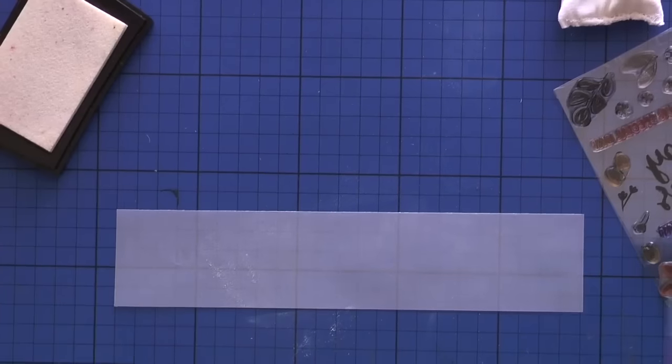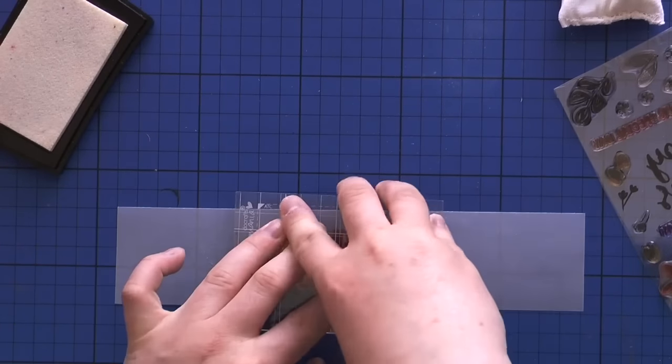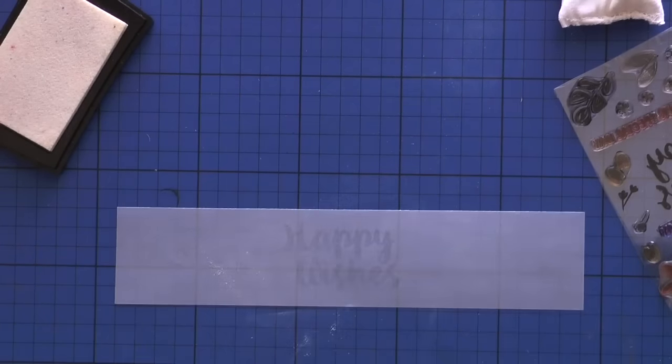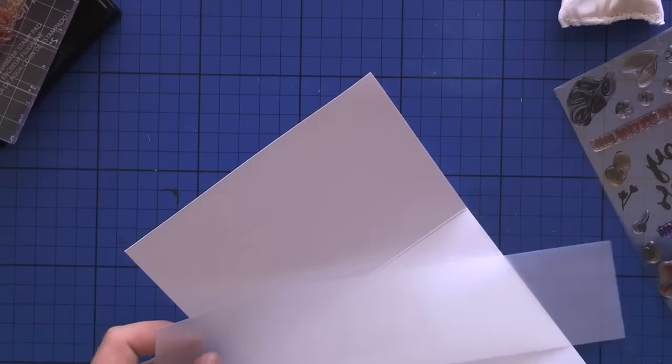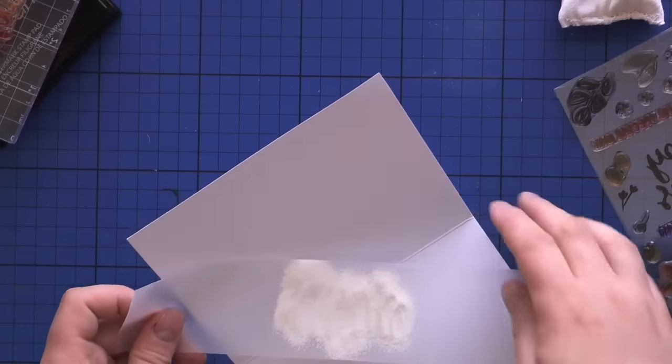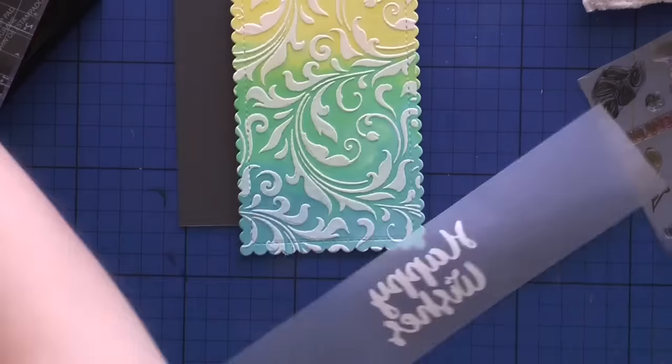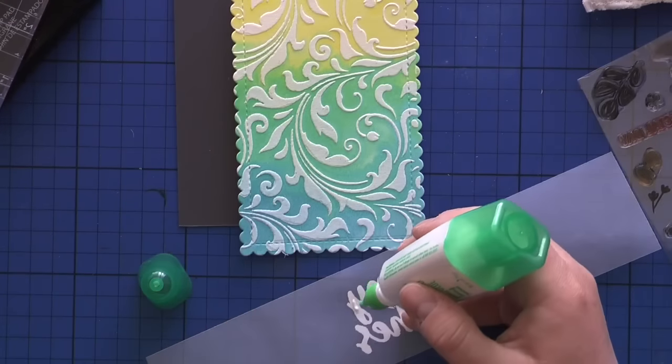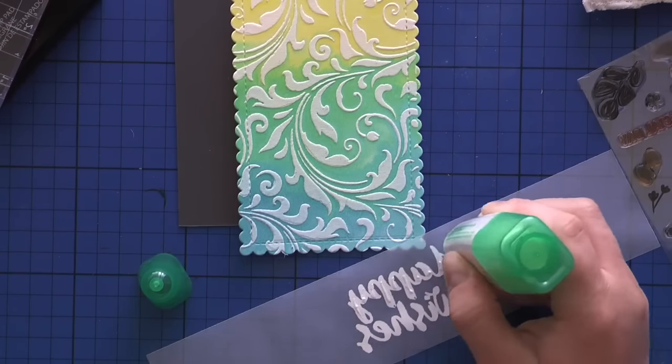Now I'm going to stamp the sentiment, which is also from W Plus Nine's Happy Wishes stamp set. I'm stamping it with Versamark translucent ink, a sticky ink for heat embossing, and I'm going to use WOW embossing powder in opaque white and heat set it.